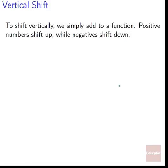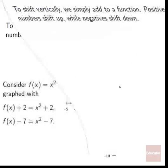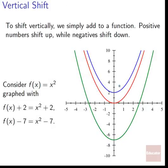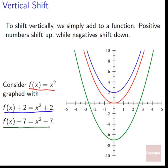The very first one is vertical shift — the easiest of all. To shift vertically, you simply add to a function. Positive numbers shift up, negatives shift down. Consider f(x) = x², graphed with f(x) + 2 (the blue graph) and f(x) − 7 (the green graph). The red part is our base function.